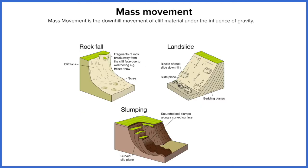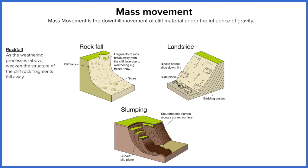We then have mass movement, which happens at the coast on cliffs. It can be split into three different types. Mass movement is the downhill movement of material under the influence of gravity. Rock fall is the weathering process we've already mentioned, mainly acting at the top of the cliff.